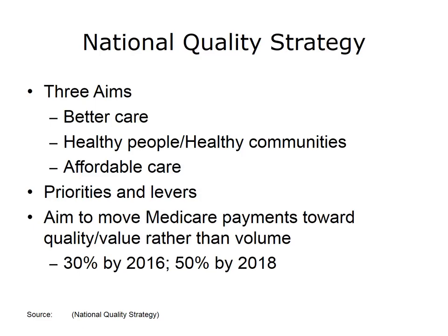Specific programs mandated by the ACA aim to improve the quality of care provided to Medicare beneficiaries. The U.S. Department of Health and Human Services set a goal of moving 30% of Medicare provider payments to alternative payment models, such as ACOs or bundled payments, by the end of 2016, and 50% by the end of 2018. Similarly, by 2016, the aim was to have 85% of all Medicare fee-for-service payments tied to quality, or value, through the physician value-based payment program.